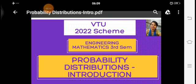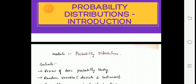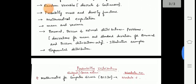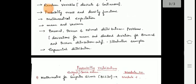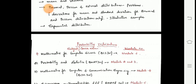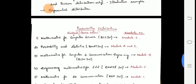This chapter is to be studied by different branch students. I will explain the contents of this probability distribution module and also the course names related to the module numbers, as this chapter needs to be studied by many branches under different module numbers. We will go through that one by one.